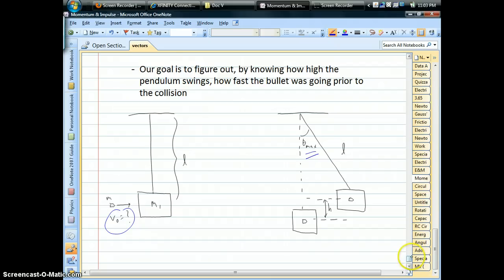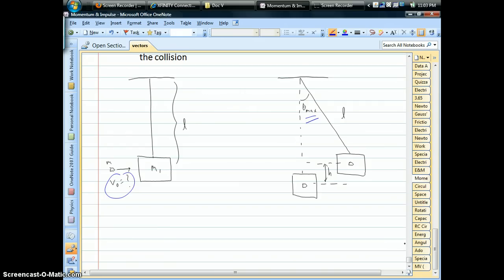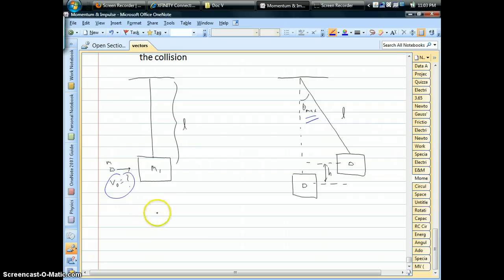Now, the trouble is, we can't use energy conservation to connect the before and after pictures, because it's inelastic collisions. And some energy is going to be lost as the bullet penetrates into the material. But momentum will be conserved.